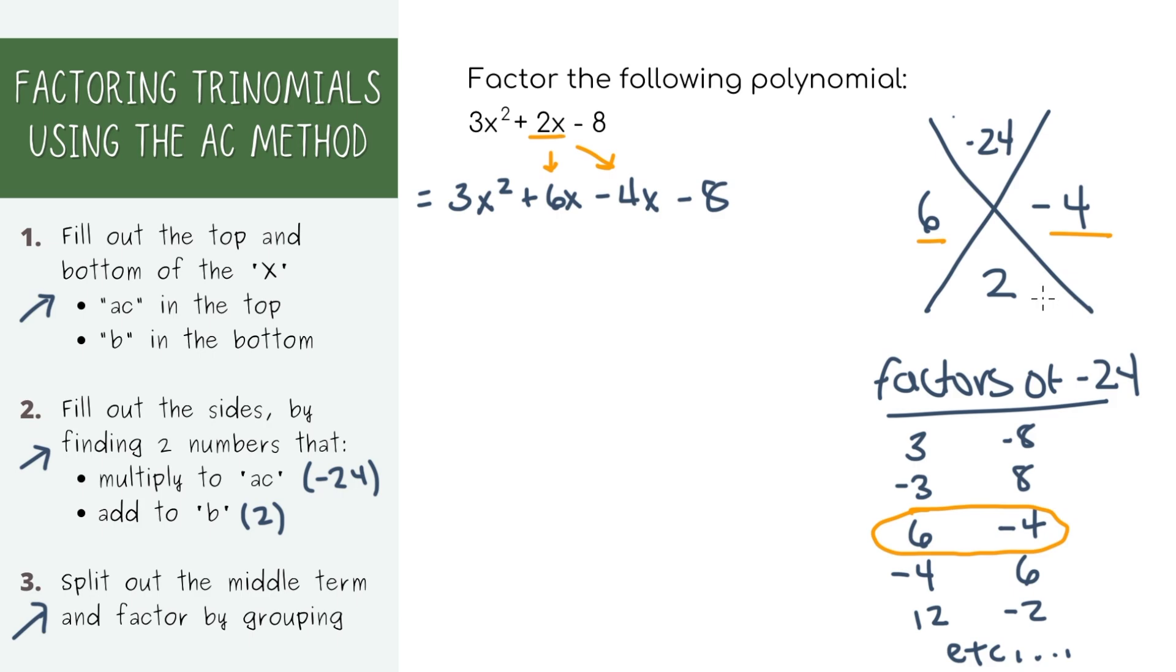Now if you're familiar with the grouping method, we're going to do the grouping method. We're going to group the first two numbers and pull out the greatest common factor. In other words, just factor the first two terms.